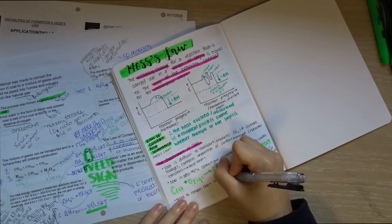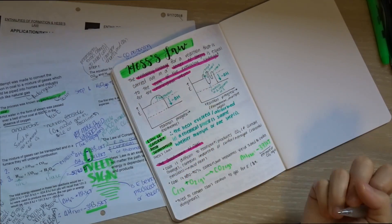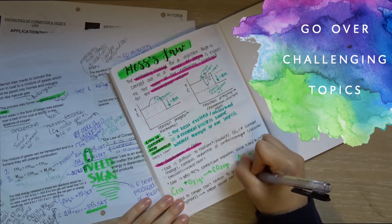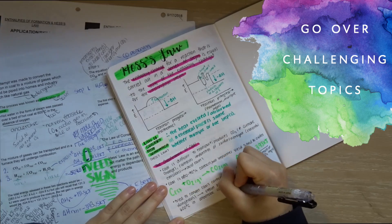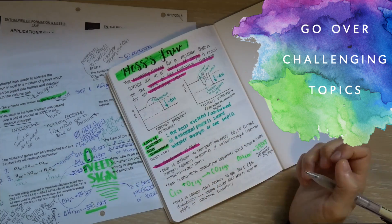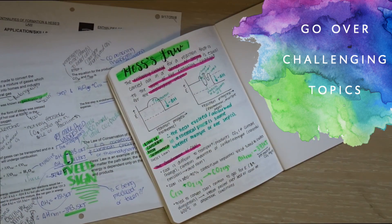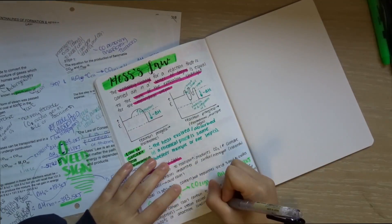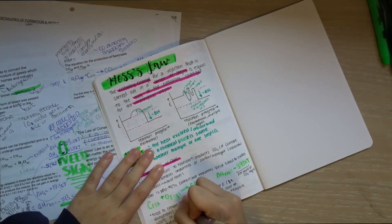Another thing I like to do before a test is to go over specific topics that I don't understand perfectly. Throughout the unit there's things that I learn and kind of understand but not completely. For example, in this unit we learned about endo and exothermic reactions, which was a pretty big topic in thermochemistry.